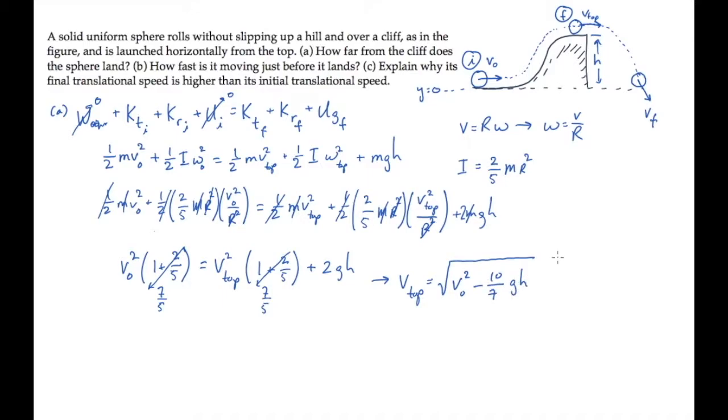At this point, let's choose some numbers so we can calculate the speed at the top compared to the speed at the bottom. If we let the initial speed, v-naught, be 25 meters per second, and the hill have a height of 28 meters, substituting and calculating shows us that the translational speed at the top of the hill equals 15.3 meters per second.